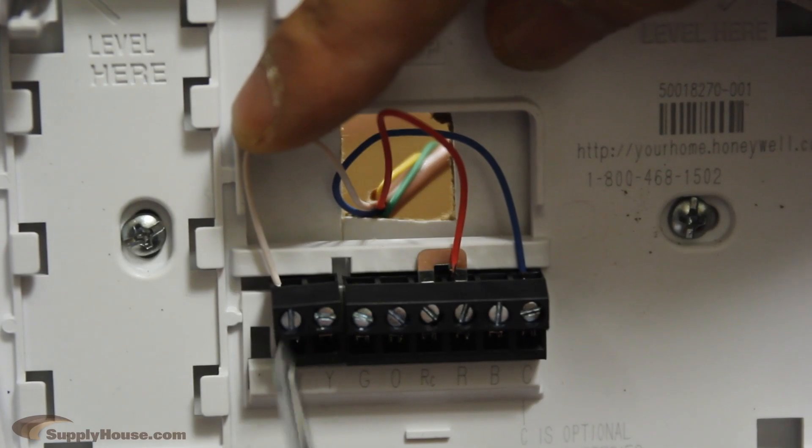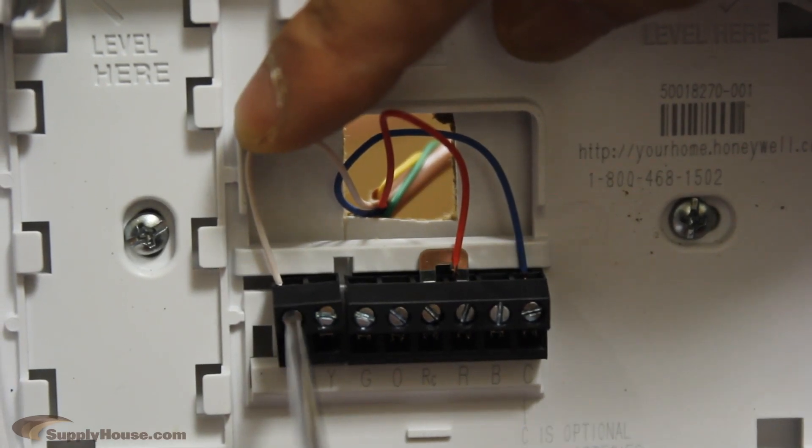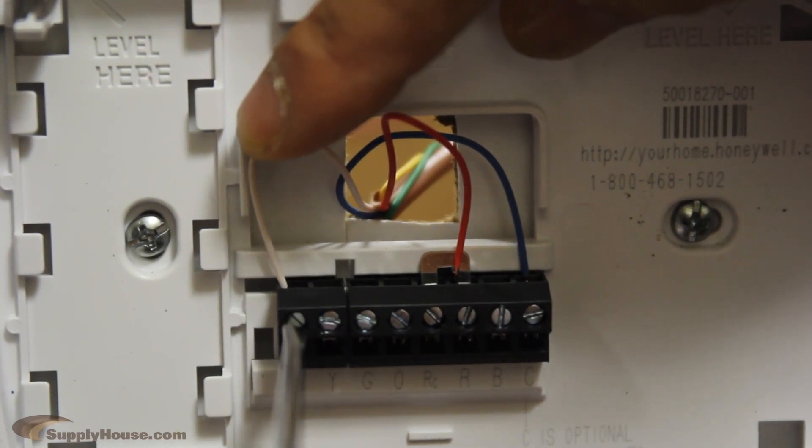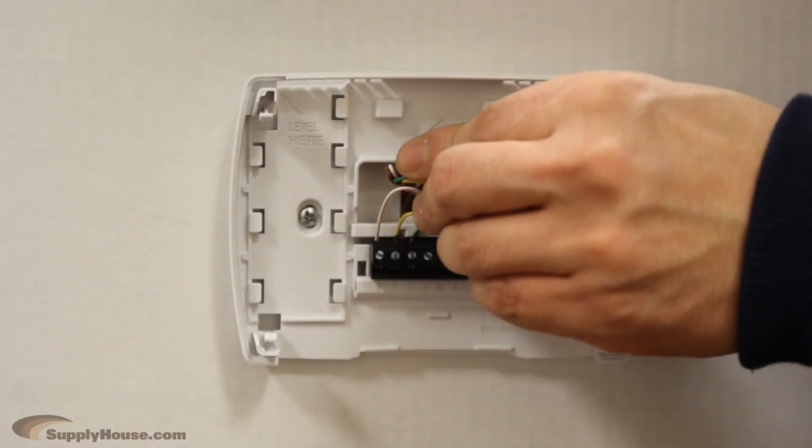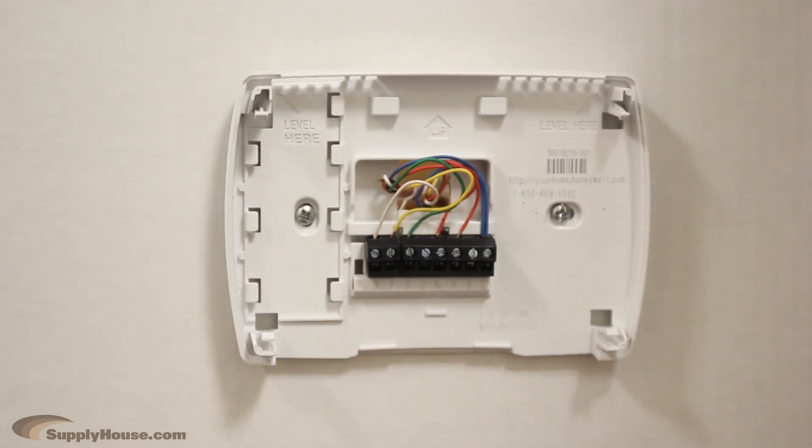The W is the call for heat and is wired to the W for the furnace, heater, heat zoning panel, or actuator valve depending on your system. Then, push the wires back into the wall and attach the thermostat to the plate.